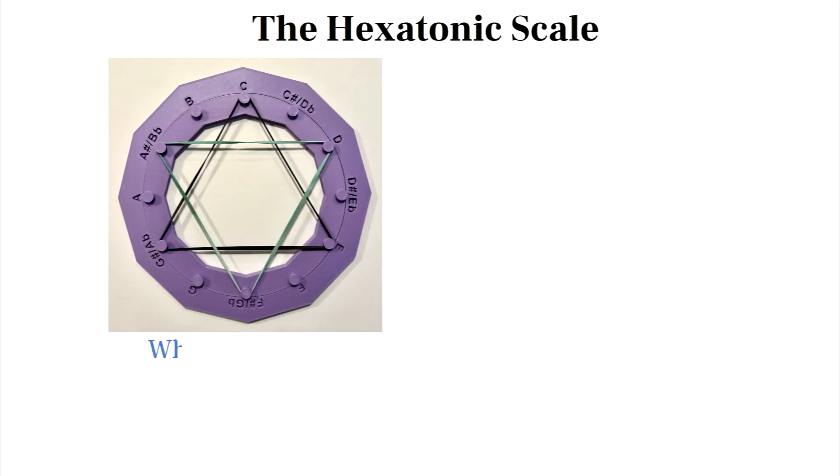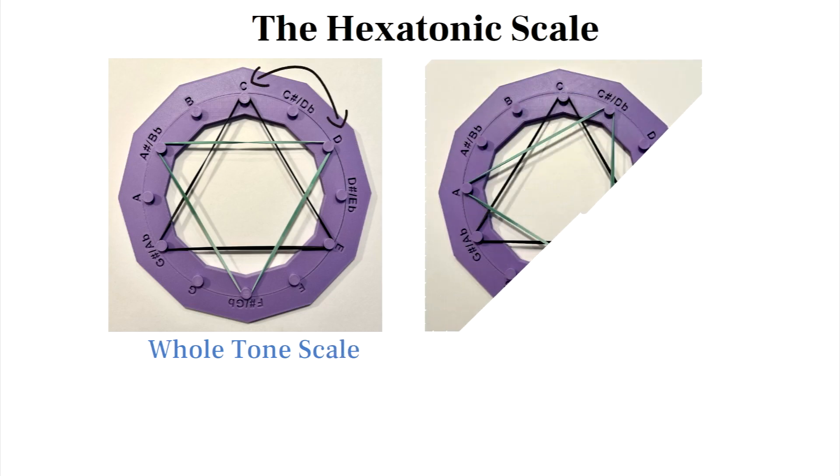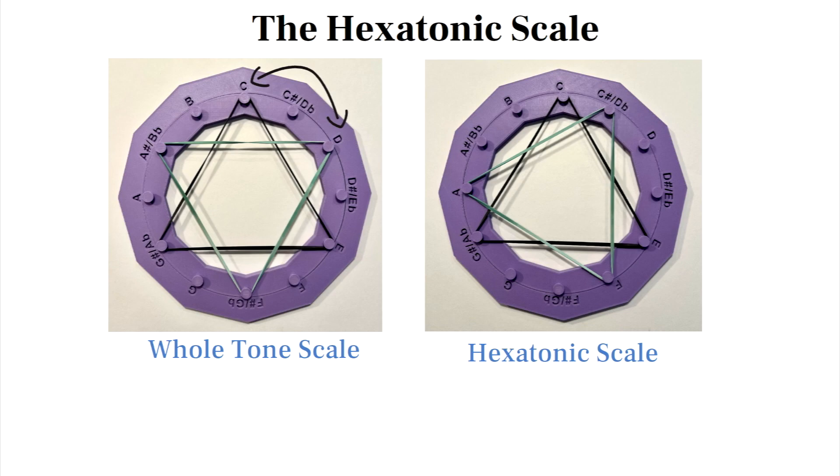While the whole tone scale covered last episode is made up of two augmented chords a whole step apart, we can think of the hexatonic scale as being made up of two augmented chords a half step apart from each other. It's often referred to as the augmented scale for this reason.